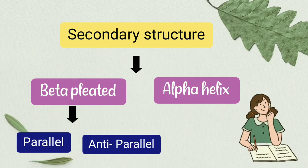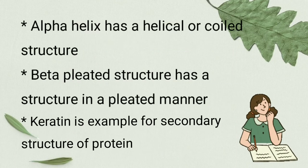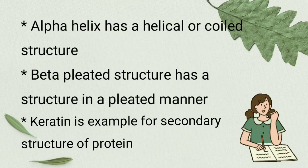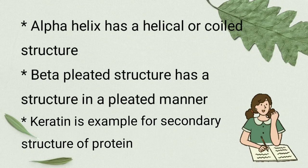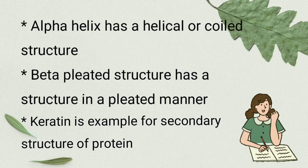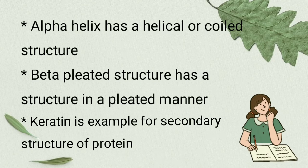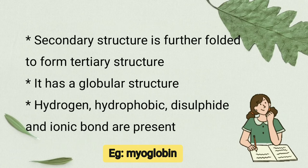Beta pleated structure is further divided into parallel and anti-parallel. Alpha helix has a coiled or helical shaped structure, and beta pleated structure has a pleated form of structure. Keratin is an example of secondary structure of protein.